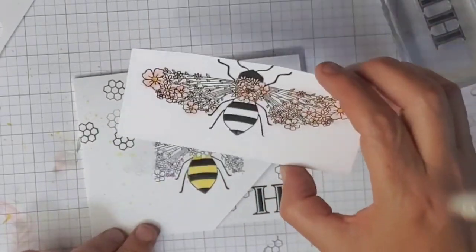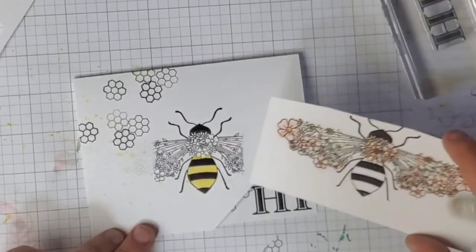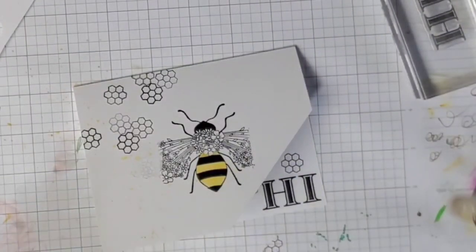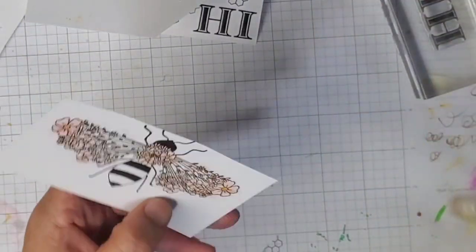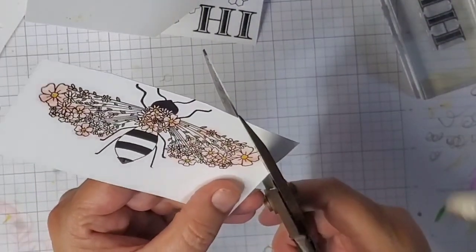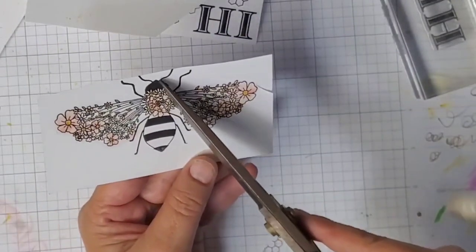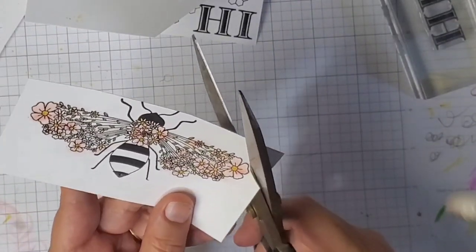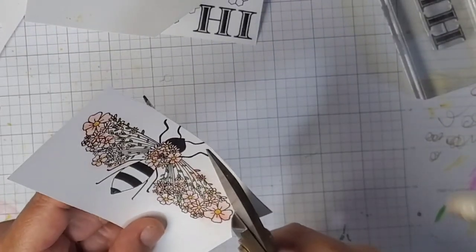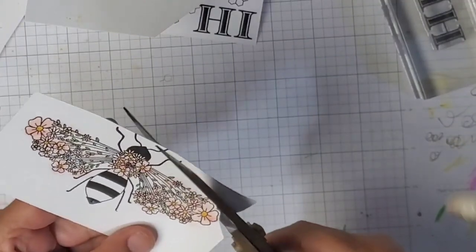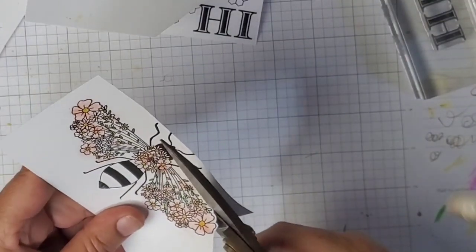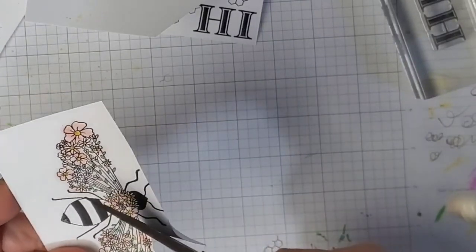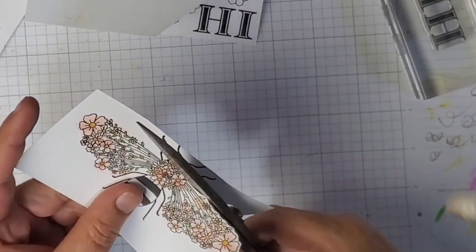So all we have to do is fussy cut this and attach it, and then if we decide we want some kind of bling, we need to do that. Now, when you're cutting it, you don't need to cut the bee out. You're just cutting all these flowers. You're just cutting the wings, right?